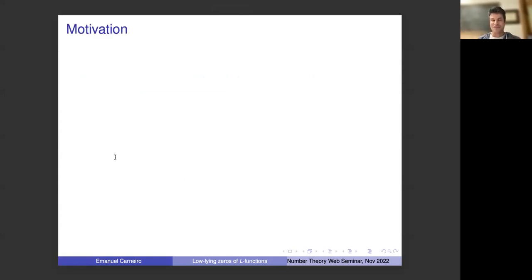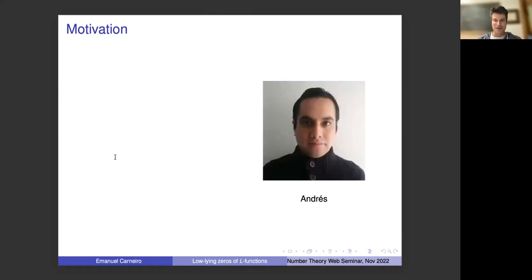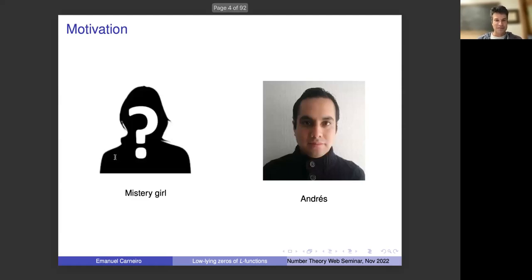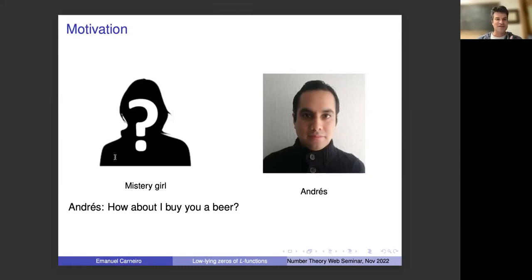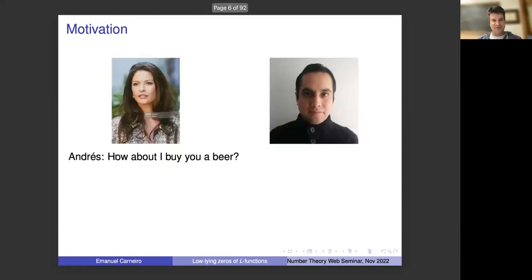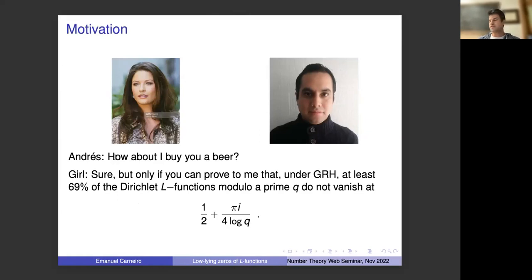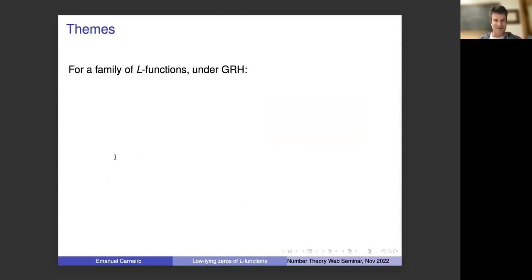I'll start with a little bit of motivation. This is my co-author in this paper, Andres Cire. Let's assume that he arrives at the bar and meets a mystery girl that he likes and he offers her, 'How about I buy you a beer?' And the girl says, well, the girl likes the Riemann zeta function and number theory very much. She says, 'Sure, but only if you can prove me that under the generalized Riemann hypothesis, at least 69% of the Dirichlet L-functions modulo prime q do not vanish at the point one-half plus pi i over four log q.' Our hero is going to be lucky because this is a problem he knows how to solve.